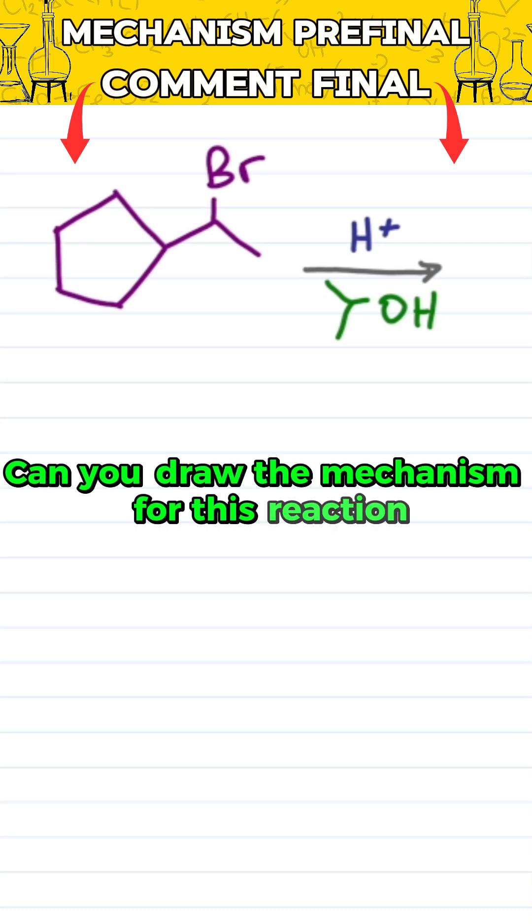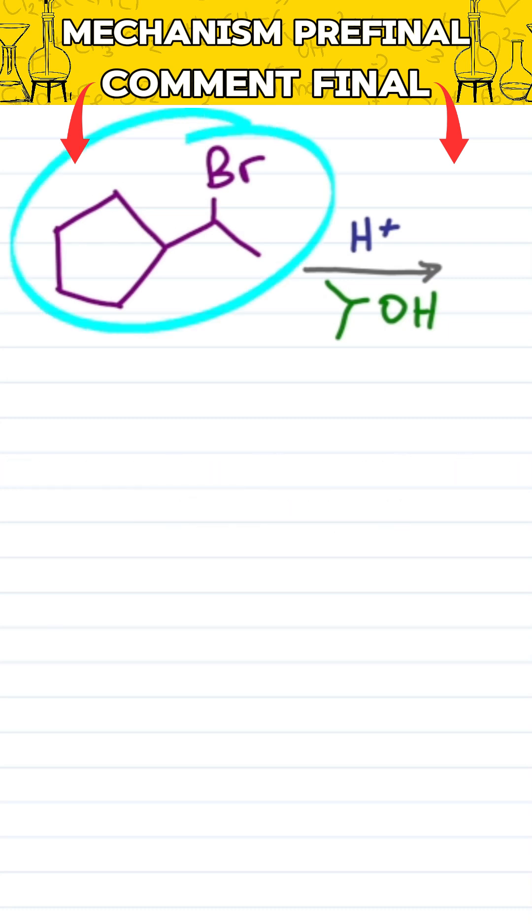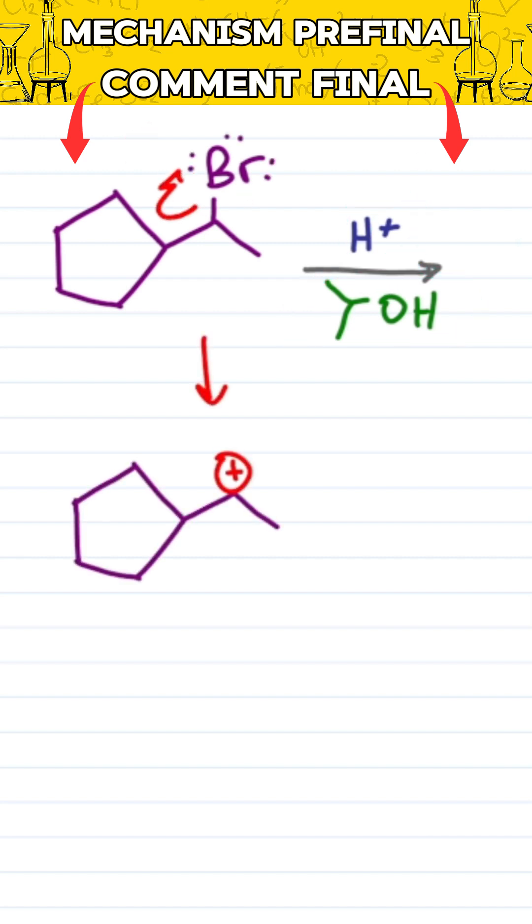Can you draw the mechanism for this reaction? I have an alkyl halide with a bromine on a secondary carbon reacting with acid and alcohol. First, the leaving group breaks away giving me a carbocation intermediate.